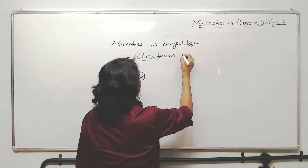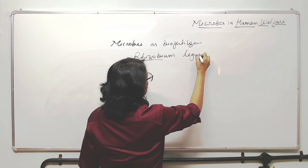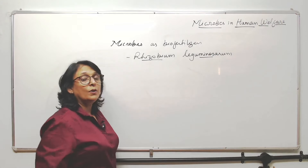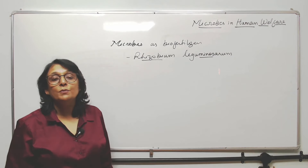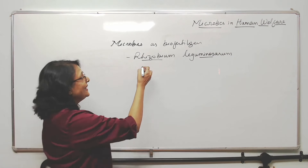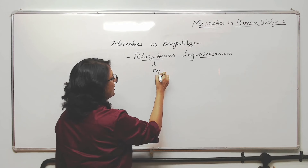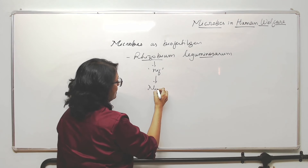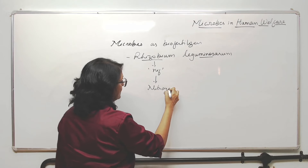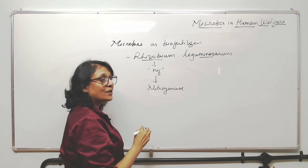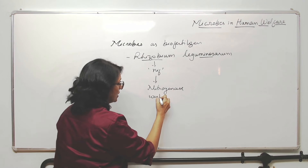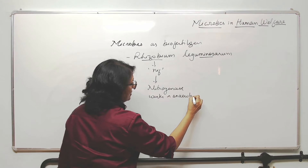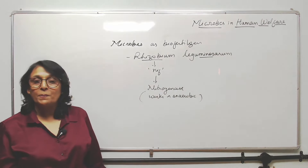Rhizobium leguminosarum is found in the roots of leguminous plants. It has a gene called the NIF gene, because of which it makes an enzyme called nitrogenase. This nitrogenase works in anaerobic conditions and fixes nitrogen for the plant.